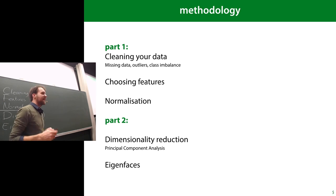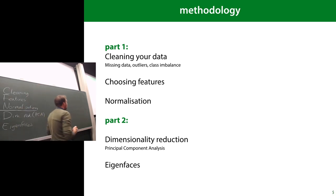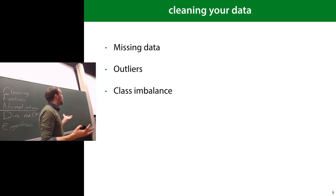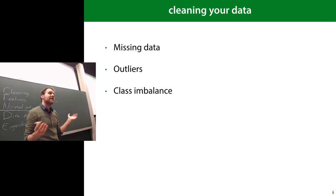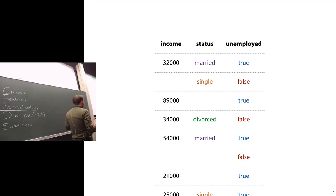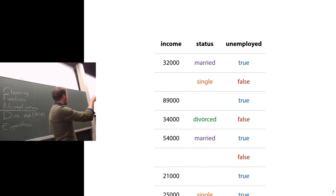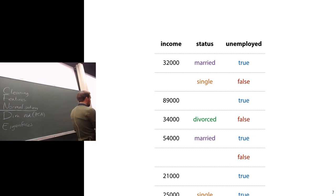So, how do we clean up our data? Let's say we have a dataset we want to feed to a machine learning algorithm, but it might have missing data, outliers, and class imbalance. Starting with missing data: we have a nicely formatted dataset except for these gaps, and we need to deal with them because machine learning algorithms don't know what to do with missing values unless you tell them.